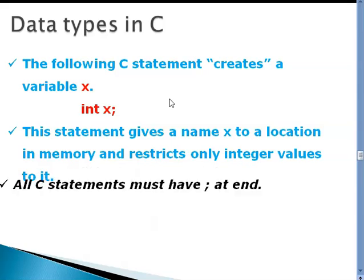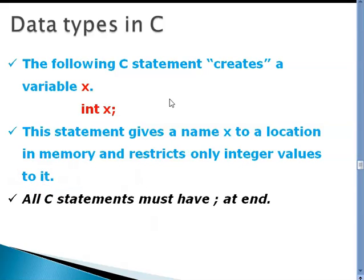We use that semicolon at the end because every C statement must have a semicolon at the end. So this statement selects a particular location in memory, gives it a name, and restricts only integer values to it.